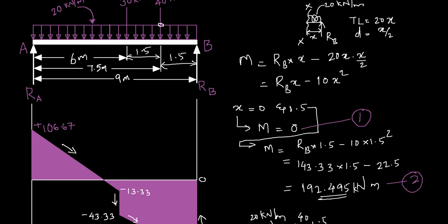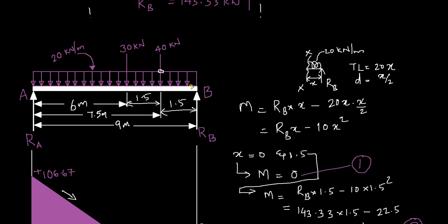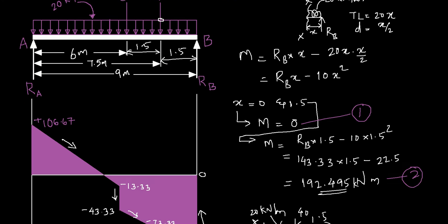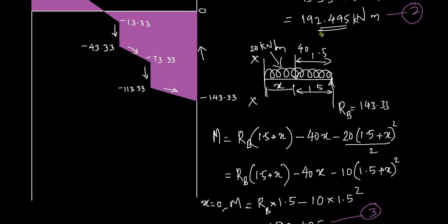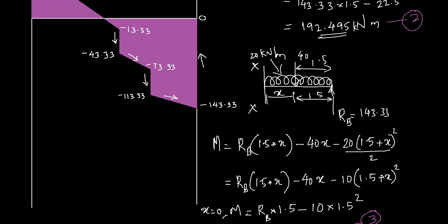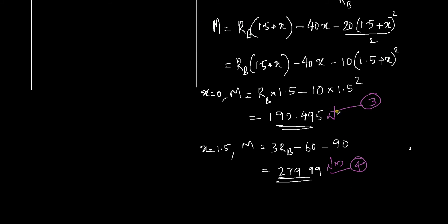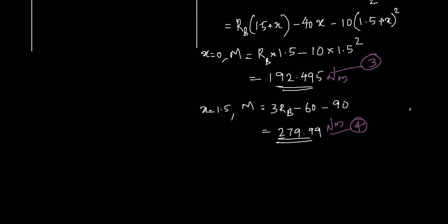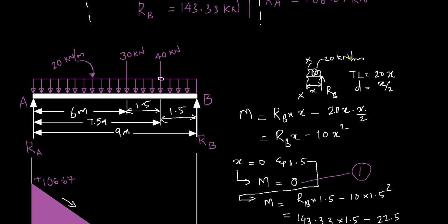It is a good method to check that you are doing it right: when you take sections here and here you will have a common point. The 40 kN load will be the ending point of the first section and the starting point of the next section, and in both equations you should get the same moment at that location. We managed to get 192.495 in both cases. Now you need to create the third moment equation, which is between the 30 kN load and the reaction at A.